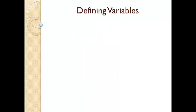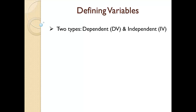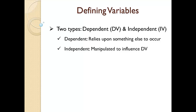Let's kick things off by defining variables. There are two types of variables: dependent and independent. You may also hear these referred to as DV and IV. A dependent variable relies upon something else to occur to have a result, hence the reason it is called dependent. An independent variable is something that is manipulated or changed in a research study, typically to watch the impact on the dependent variable.